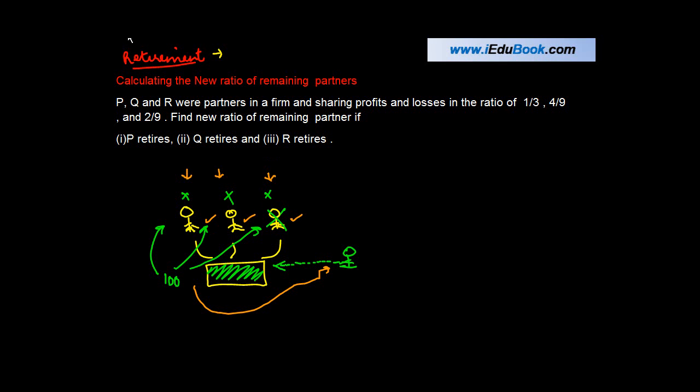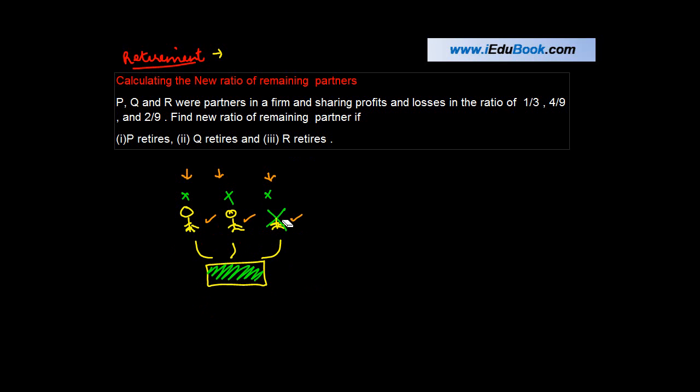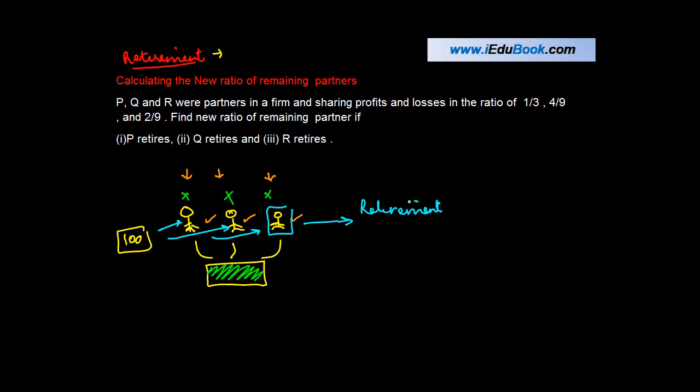Similar is the case now. Let's say there was this kitty of hundred rupees shared between three people. Suddenly, one of them decides, okay, I am moving out of the partnership. This could be due to various reasons: retirement where someone decides they don't want to work with the firm, or there could be a death of a partner.